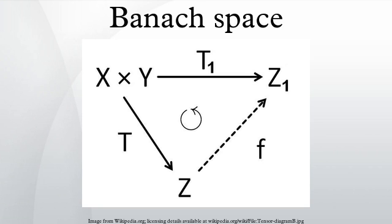Every normed space X can be isometrically embedded in a Banach space. More precisely, there is a Banach space Y and an isometric mapping T from X to Y such that T(X) is dense in Y. If Z is another Banach space such that there is an isometric isomorphism from X onto a dense subset of Z, then Z is isometrically isomorphic to Y.